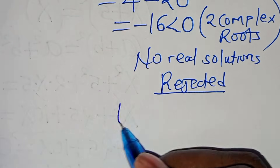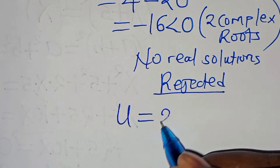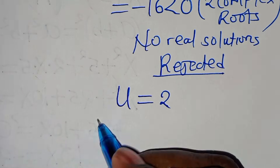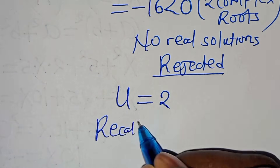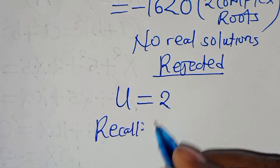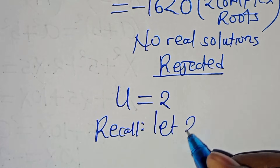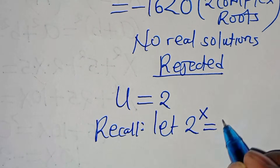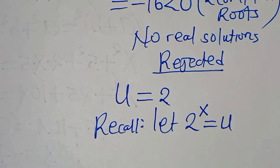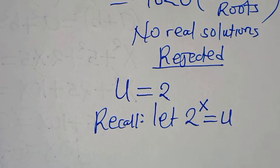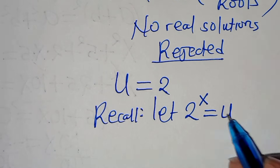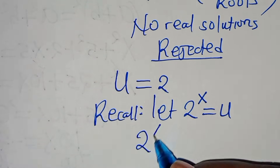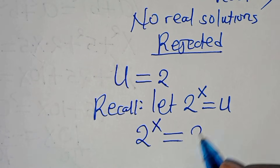So let's focus on u equals 2. Recalling that we set 2 to the power of x equal to u, we substitute u here so that 2 to the power of x is equal to 2.